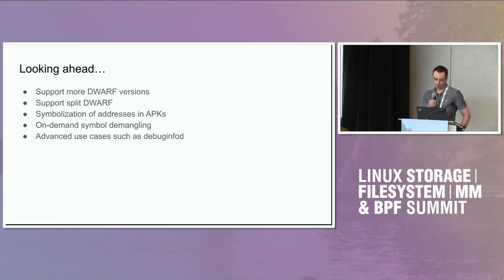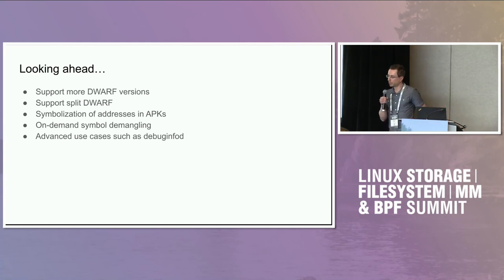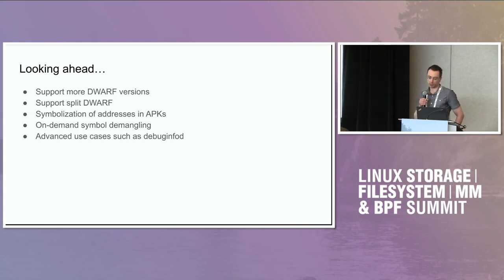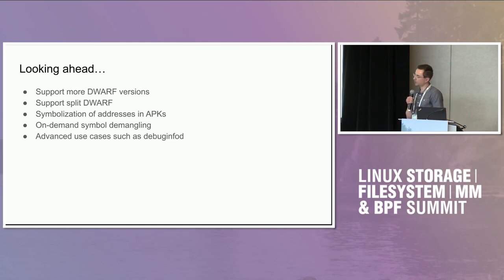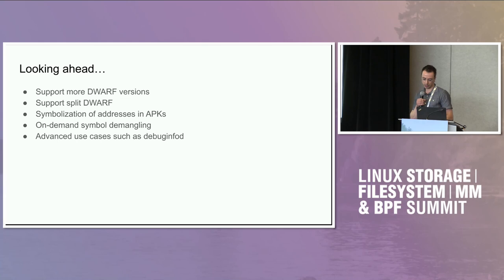We would also like to have transparent support for name demangling or symbol demangling. If you're dealing with Rust or C++ symbols, they are encoded in a special way, and it makes sense for the library in a batteries-included fashion to take care of demangling them in the process. And lastly, we would like to support advanced use cases such as the usage of DebugInfoD, which will likely happen as a bolted-on solution rather than being part of the core library, but we would really like to support that moving forward.